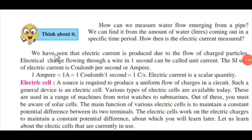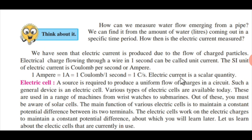Electric current is produced due to the flow of charged particles. The electrical charge flowing through a wire in one second is called unit current. The SI unit of electric current is coulomb per second, also called ampere. One ampere (1 A) is equal to 1 coulomb per second. Electric current is a scalar quantity because it has both direction and magnitude.